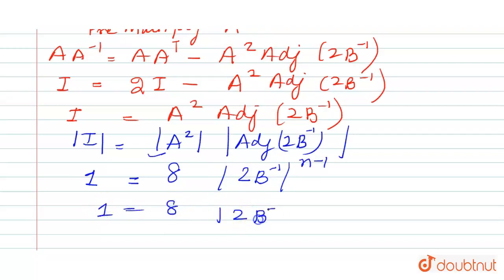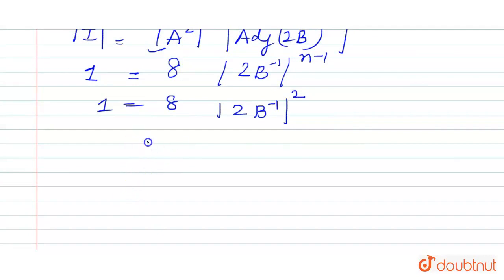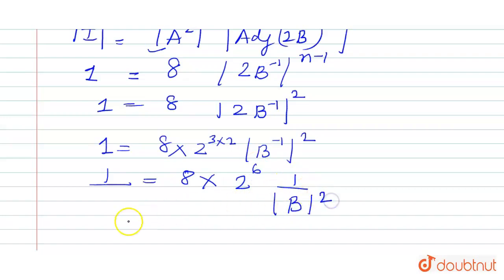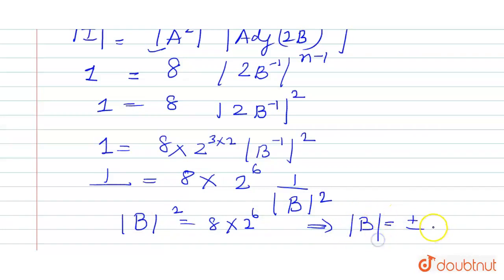Putting in the values, 2B inverse raised to the power 3 minus 1 equals 2. Since B is also of third order, we take 2 cubed outside from the determinant. We are left with 8 into 2 cubed divided by determinant of B inverse squared. After simplifying, we have 1 equals 8 into 2 raised to the power 6 times 1 over determinant of B squared. So we can calculate the value of determinant of B squared from here: determinant of B squared equals 8 into 2 raised to the power 6.